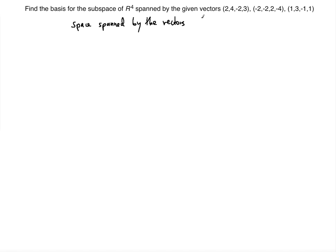Row space of matrix and the matrix is going to be given by three columns, I'm sorry three rows and four columns, right? So I'm gonna place them like 2, 4, -2, 3.